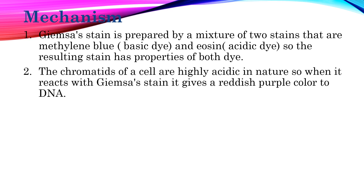The RNA of a cell is removed by the acid hydrolysis step, in which the smear is treated with one normal HCl in a water bath at 60 degrees Celsius for 5 minutes. During this step, due to heat and acid, the bonds between the base pairs of RNA molecules become weak and break.